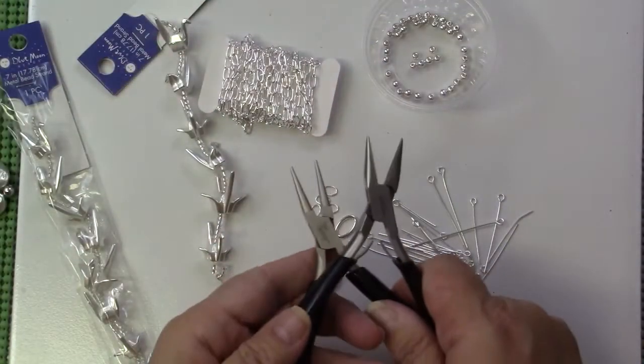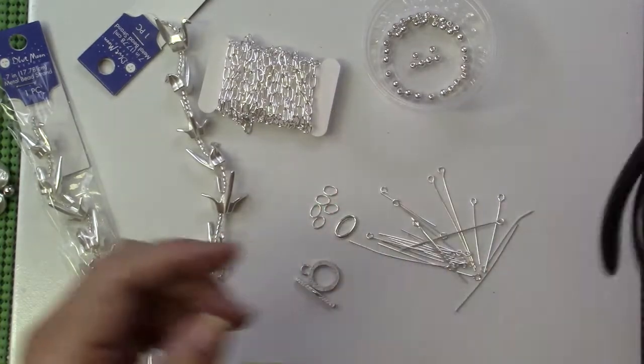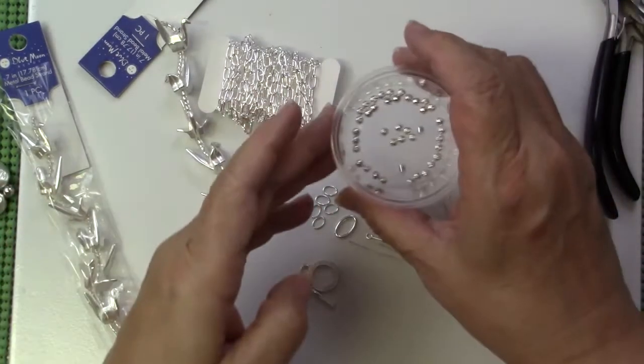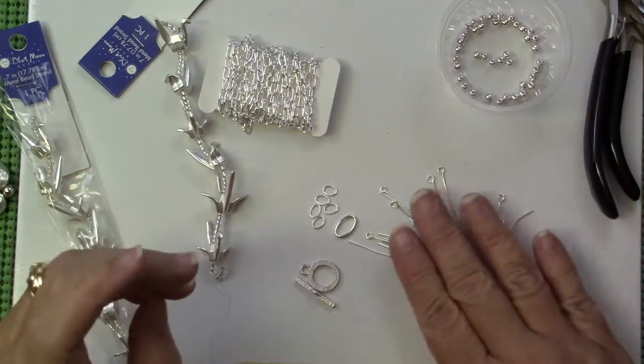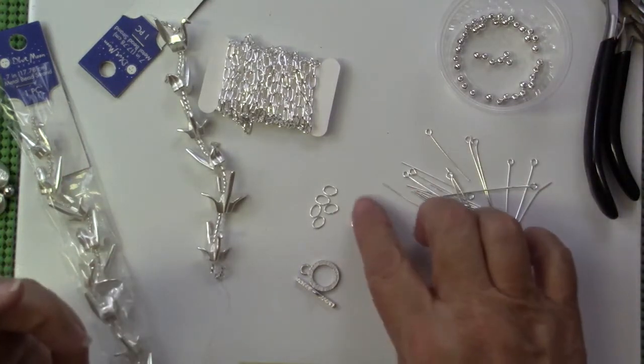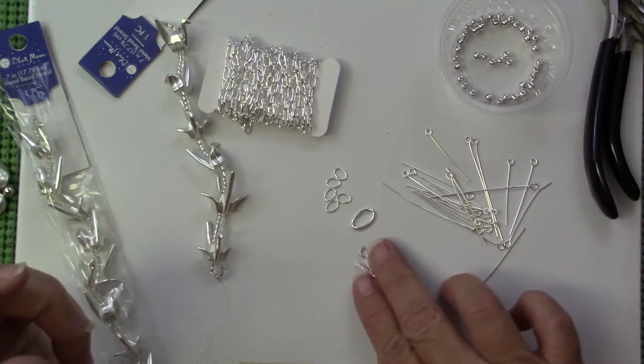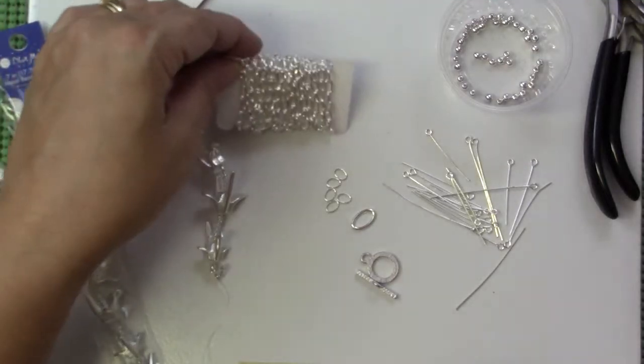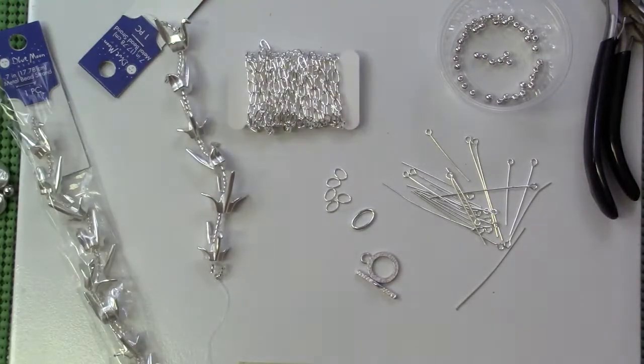The other materials and tools that we'll use are just jewelry pliers and we'll use some four millimeter silver beads, some head pins and a clasp and some chain. So it's really a pretty simple project.